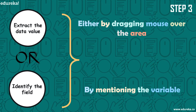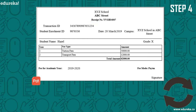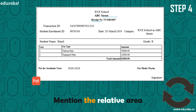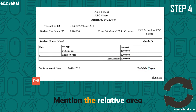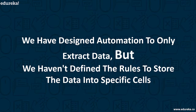You have to design a step to extract the data value or identify the field from which you want to store the data, either by dragging your mouse over the area or by mentioning a variable. Then you mention the relative area — the area next to the field from which you wish to extract the data. You can repeat this action until all the fields are designed to extract. At this point, you have designed your automation to only extract data but haven't defined the rules to store the data into specific cells.